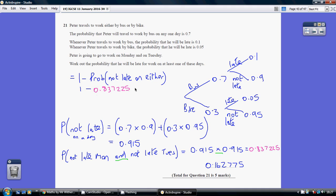That's the bit I don't want, so I do one take away that probability and I get 0.162775.